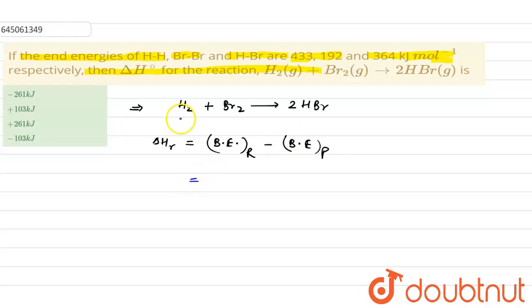Bond energy of reactant means bond energy of H₂, that is 433, plus Br₂, that is 192, minus that of HBr. So if there are two moles of it, we'll multiply 2 into 364.